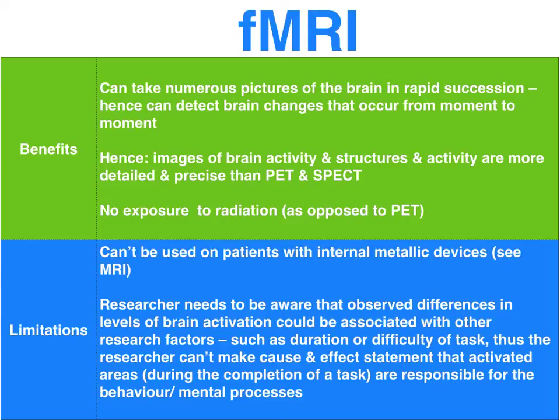There are two major advantages of the fMRI in comparison to the two functional alternatives, the PET and the SPECT. Firstly, it provides information on the rapid brain interaction that occurs from moment to moment by taking numerous pictures of the brain in rapid succession. Secondly, it provides a more detailed functional image of the brain in comparison to a SPECT or a PET. A third advantage over a PET scan is that there is no exposure to radiation.